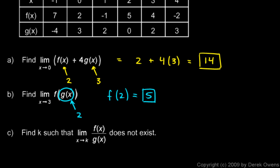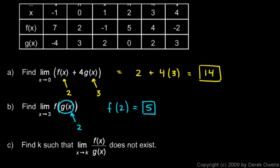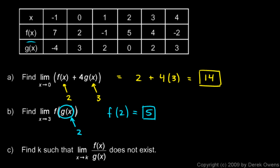We're told find k such that the limit as x approaches k of f of x over g of x does not exist. Okay, well, what would cause this limit to not exist? Well, it would not exist if we had a 0 denominator. So g of x has to be 0. So x has to be approaching what value in order for g of x to be 0. Let's look back at the table. We see here g of x has a value of 0 when x is 2. So as x approaches k, that has to be a value of 2 right there. We're told to find that value for k, k equals 2.